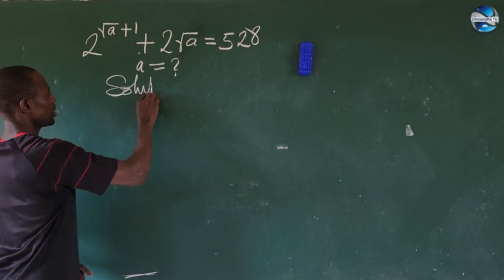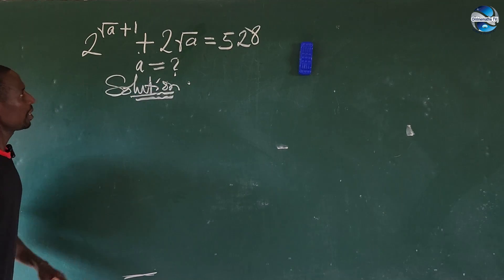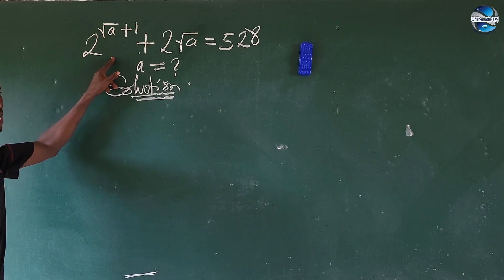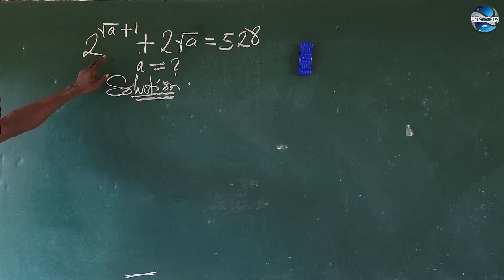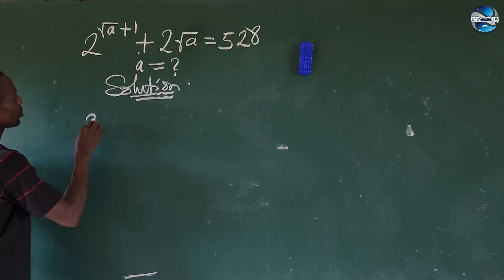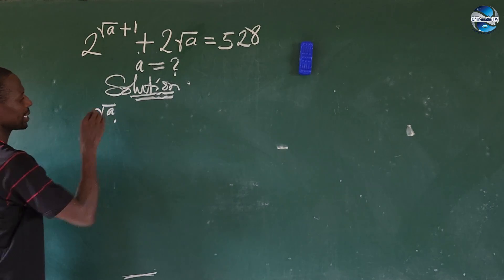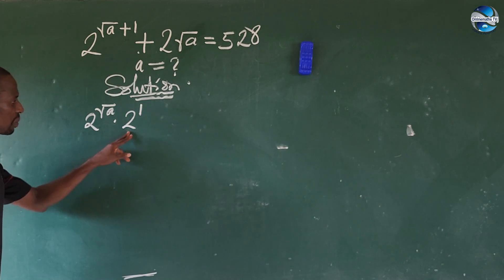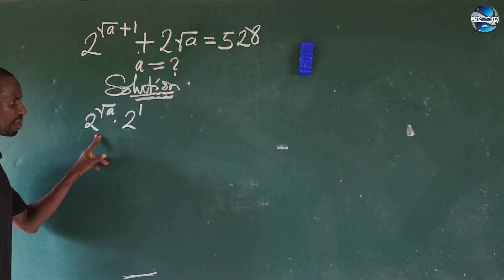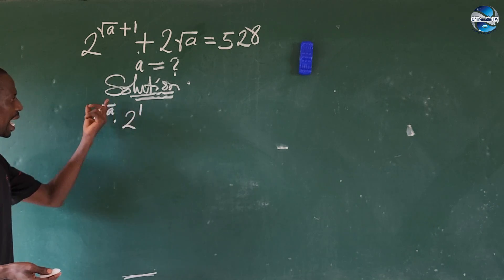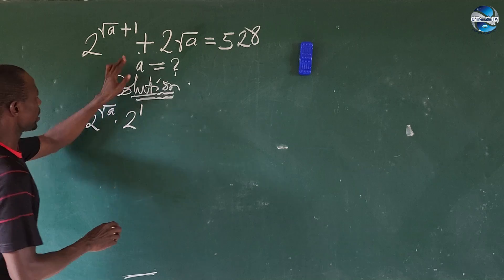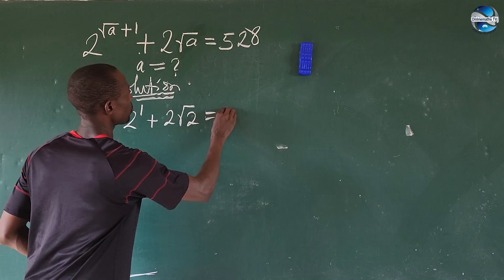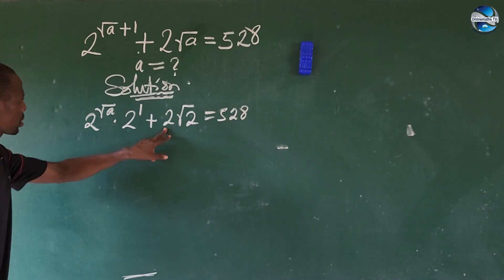Let's take the solution as usual. The first way to rewrite this expression is according to the law of indices. This is the same thing as 2 to the power of root a, times 2 to the power of 1, because we have a multiplication sign and the bases are the same — so we add the exponents. Then we have plus 2 root a, equal to 5 to 8.